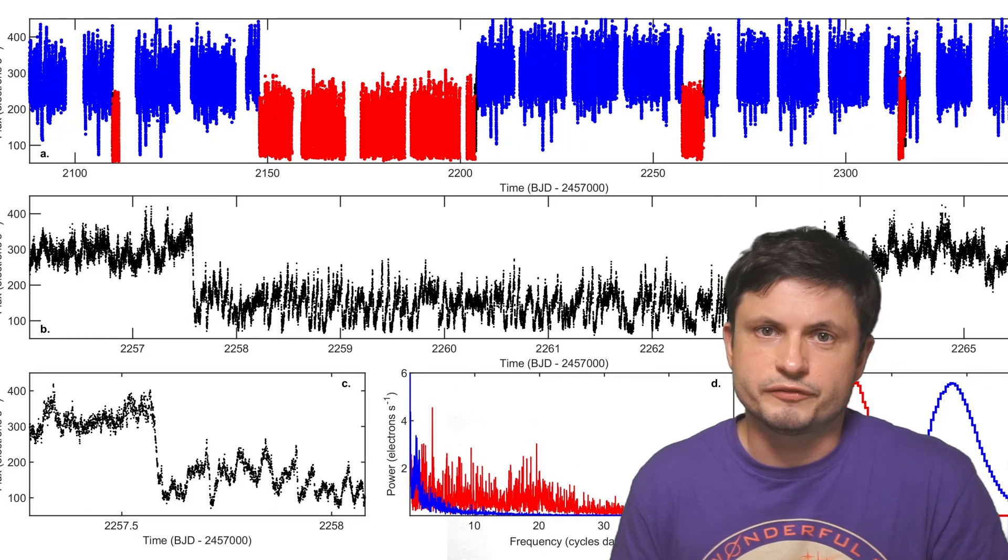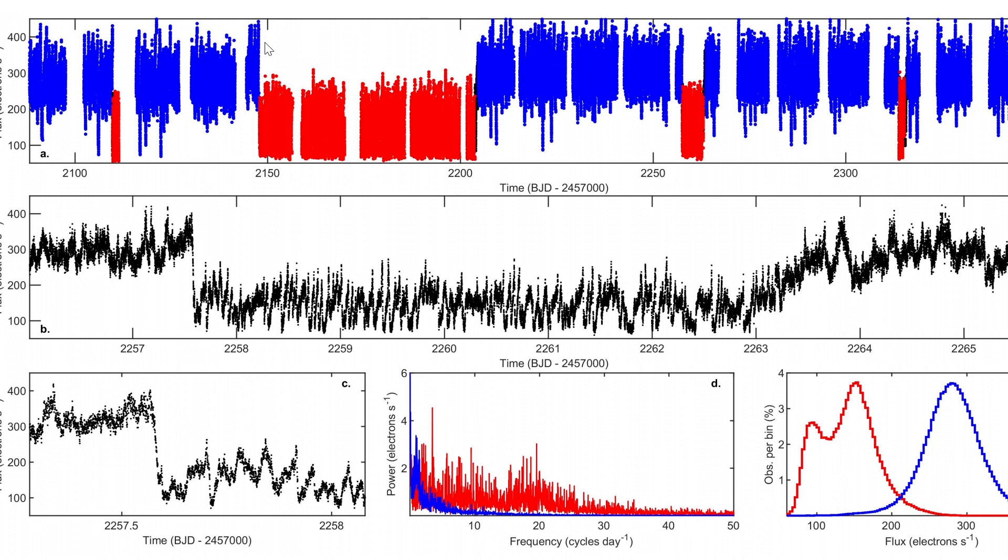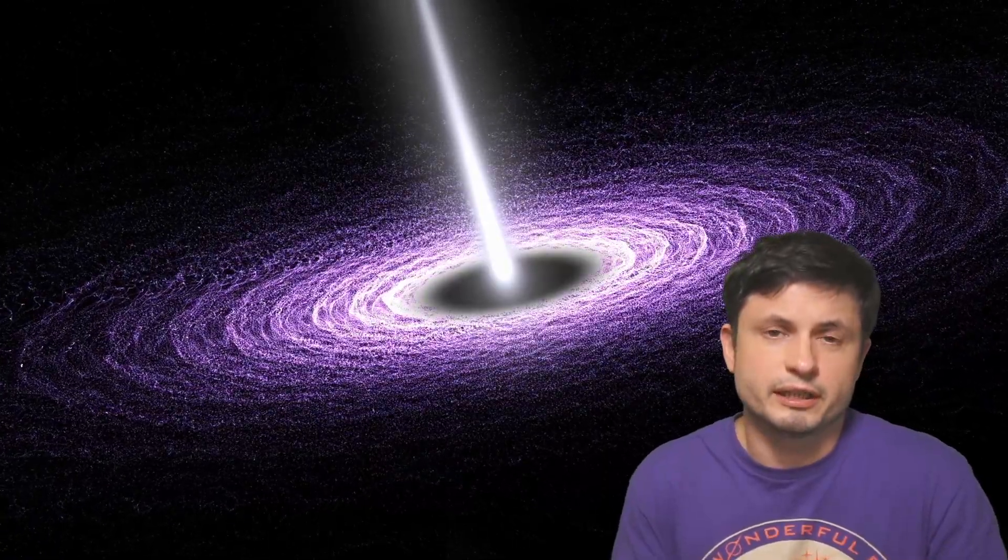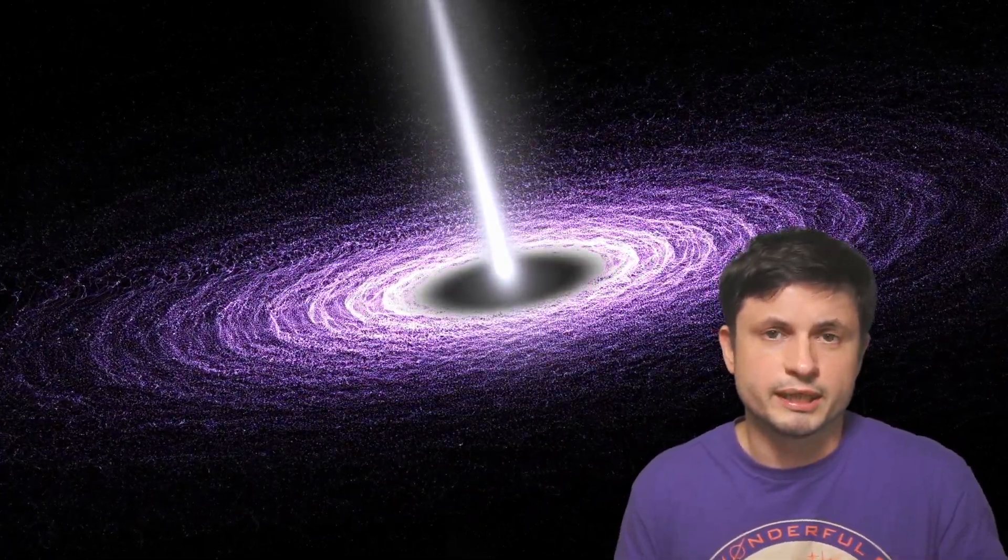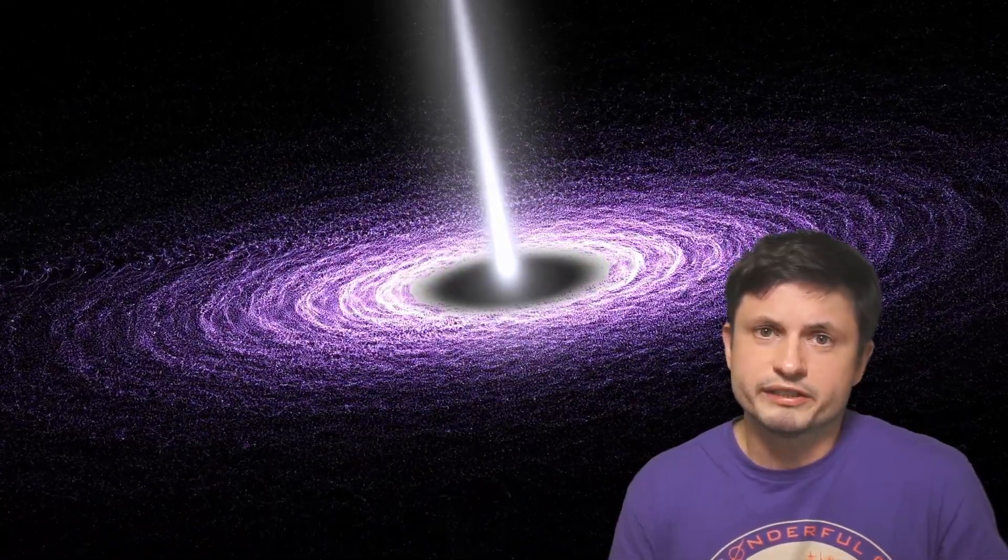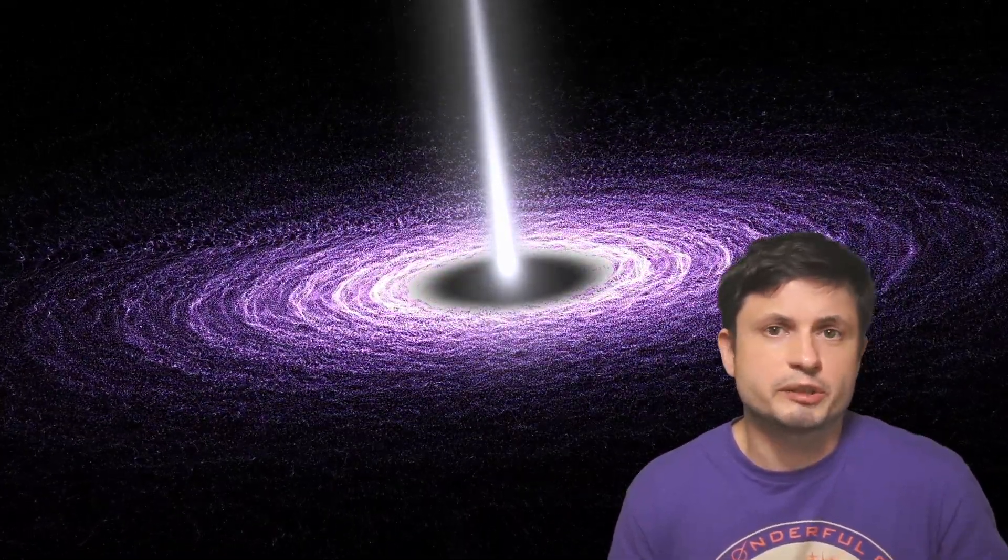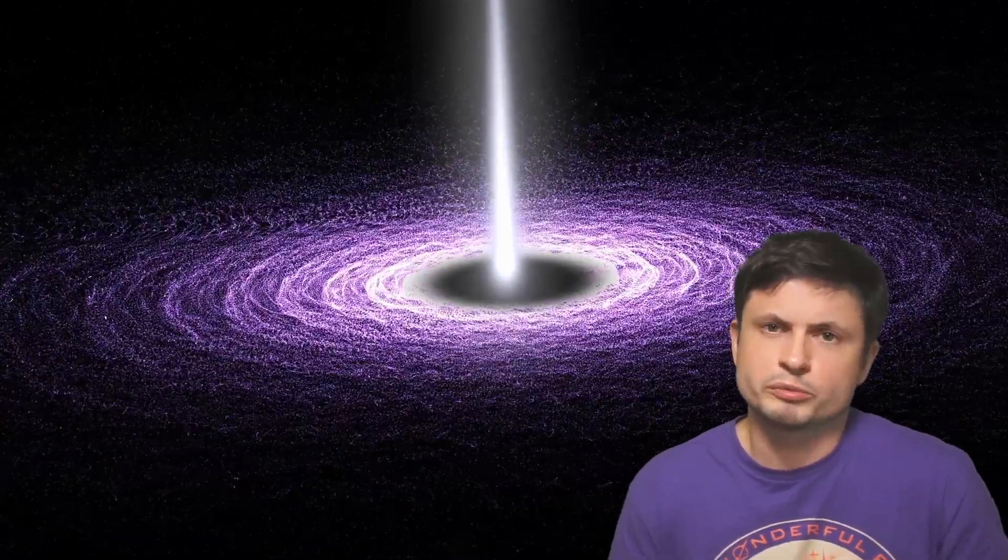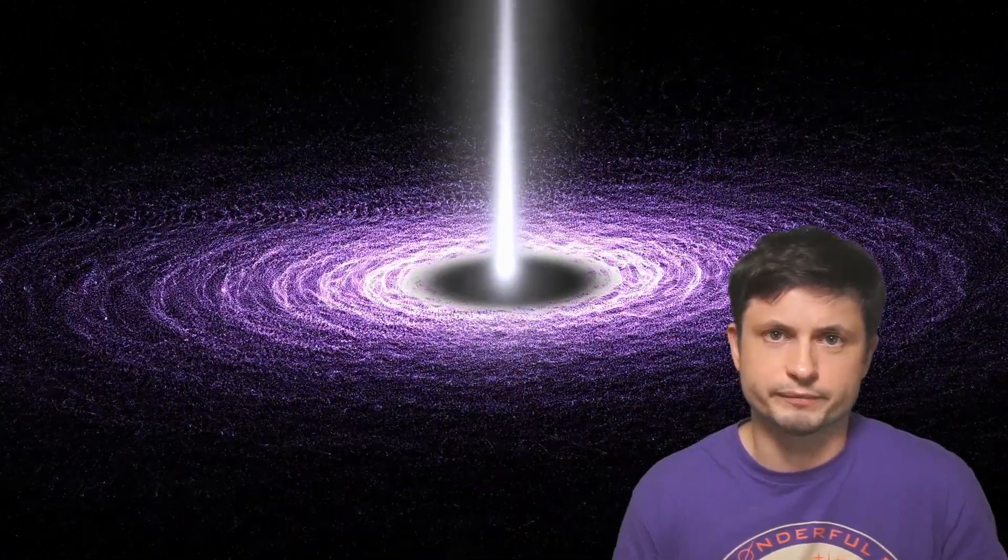But the observations from TW Pictoris show a completely different story. The brightness here changes quite dramatically and also quite fast. And as I mentioned, something like this has only been seen around different neutron stars before. In case of a neutron star, they can change their total brightness once the magnetic field around the neutron star changes the composition and the amount of matter in the accretion disk. Normally this takes only a few seconds. And this brightness variation is usually referred to as mode switching.